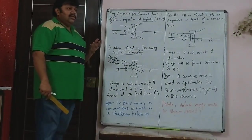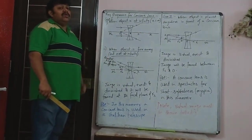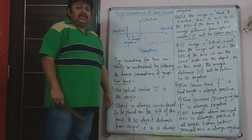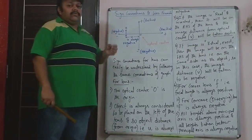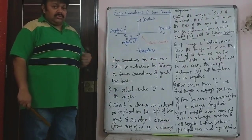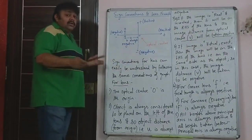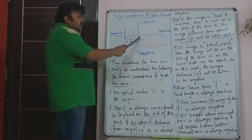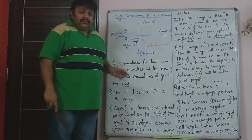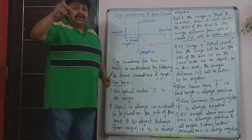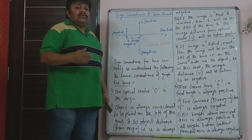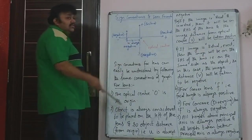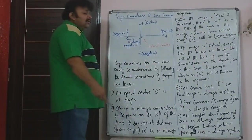We will continue with the Cartesian sign conventions for doing sums based on lenses. The sign conventions are extremely simple — just follow the same conventions as a graph. The optical center O is the origin. All distances to the right of the optical center are positive, and all distances to the left are negative — exactly like the x-axis in a graph. The principal axis is like the x-axis, and the lens itself is like the y-axis.